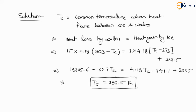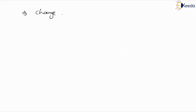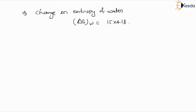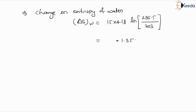After getting Tc, we can determine the change in entropy of water, ΔS_W. It will be M × Cp × ln(T2/T1) = 15 × 4.18 × ln(296.5 / 303). Simplifying this, ΔS_W = −1.35 kJ per Kelvin, because we are multiplying by the mass.